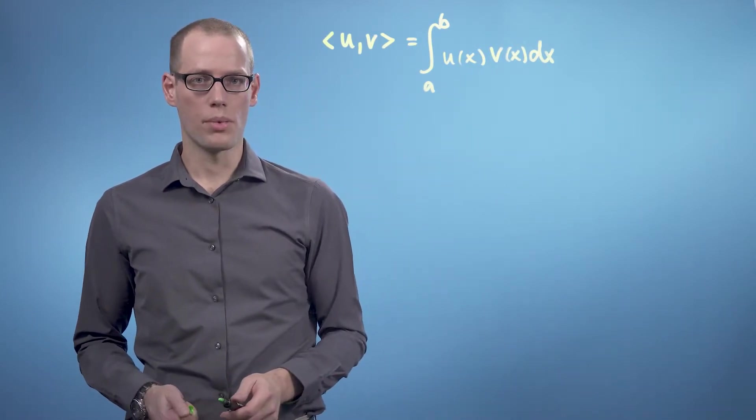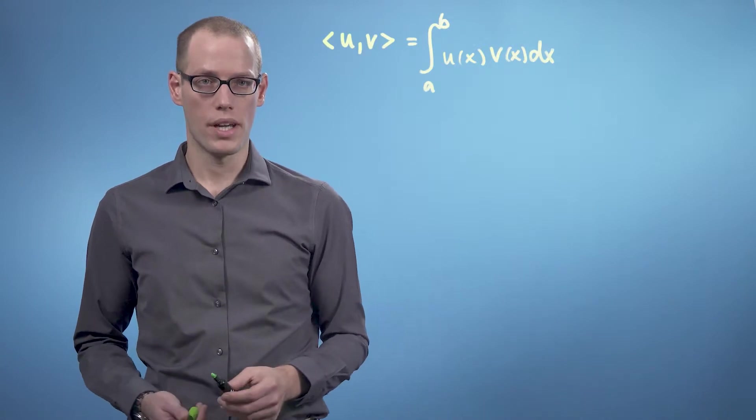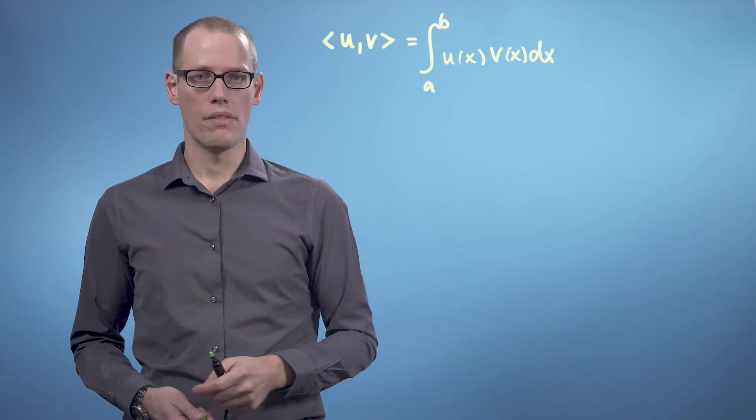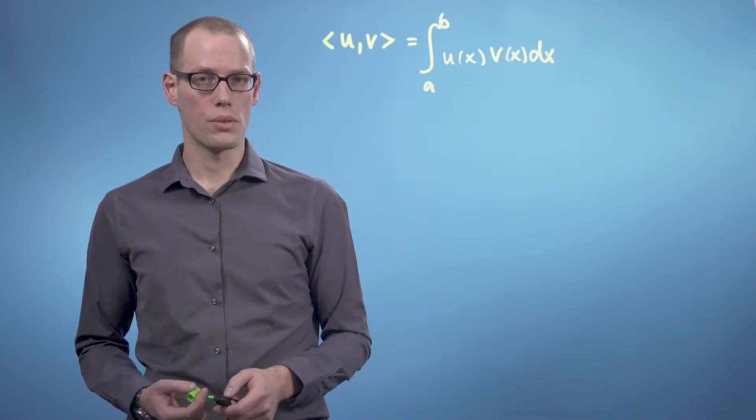As with our normal inner product, we can define norms and orthogonality by looking at this inner product. If that integral evaluates to zero, the functions u and v are orthogonal.